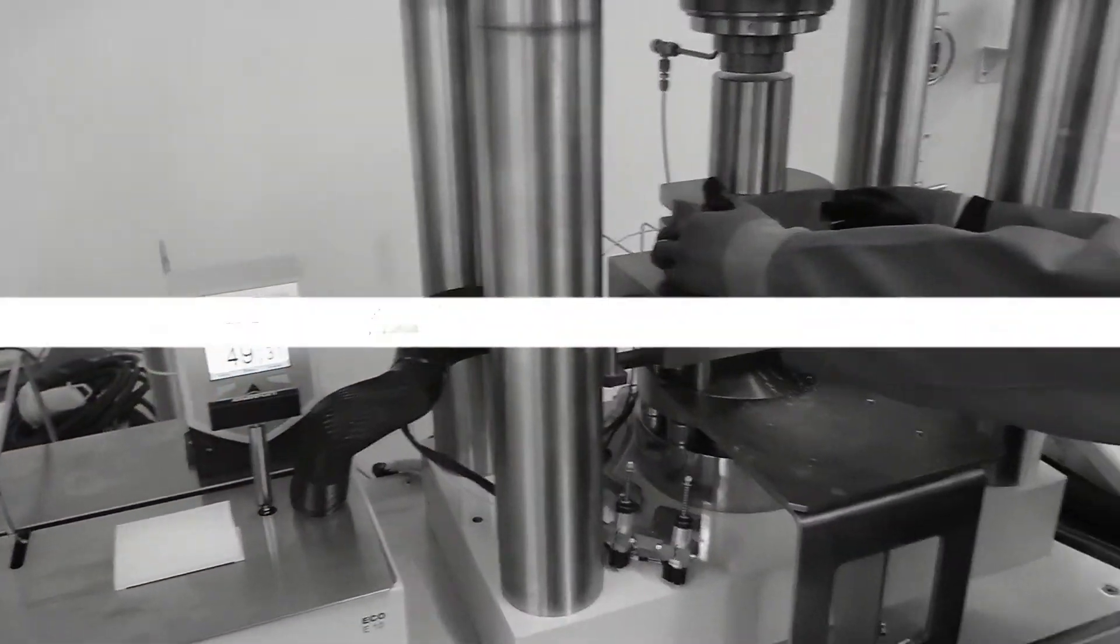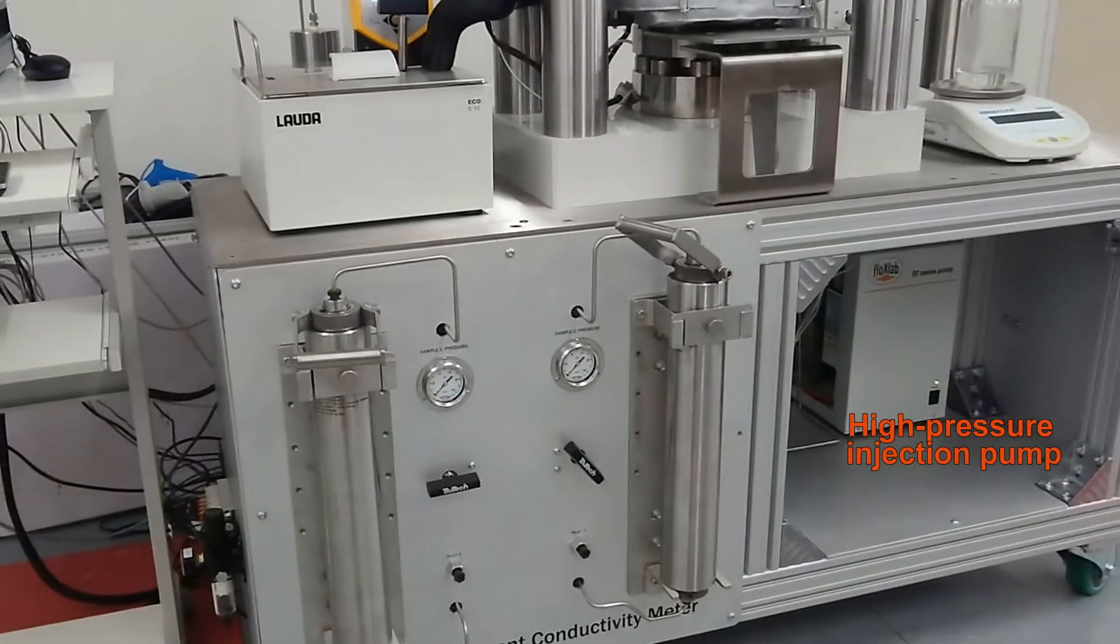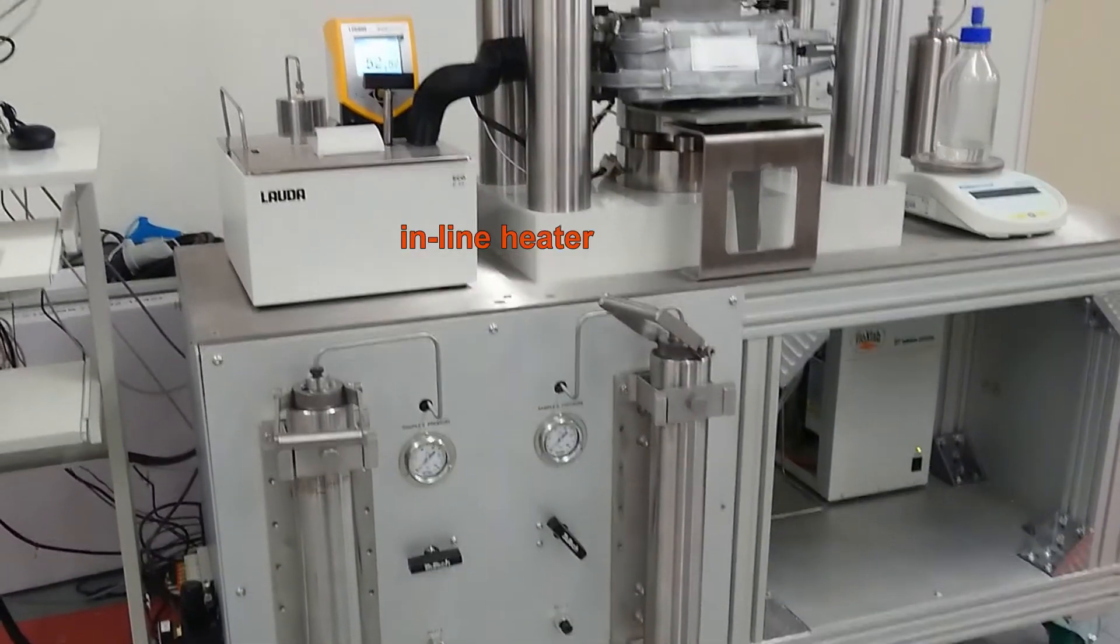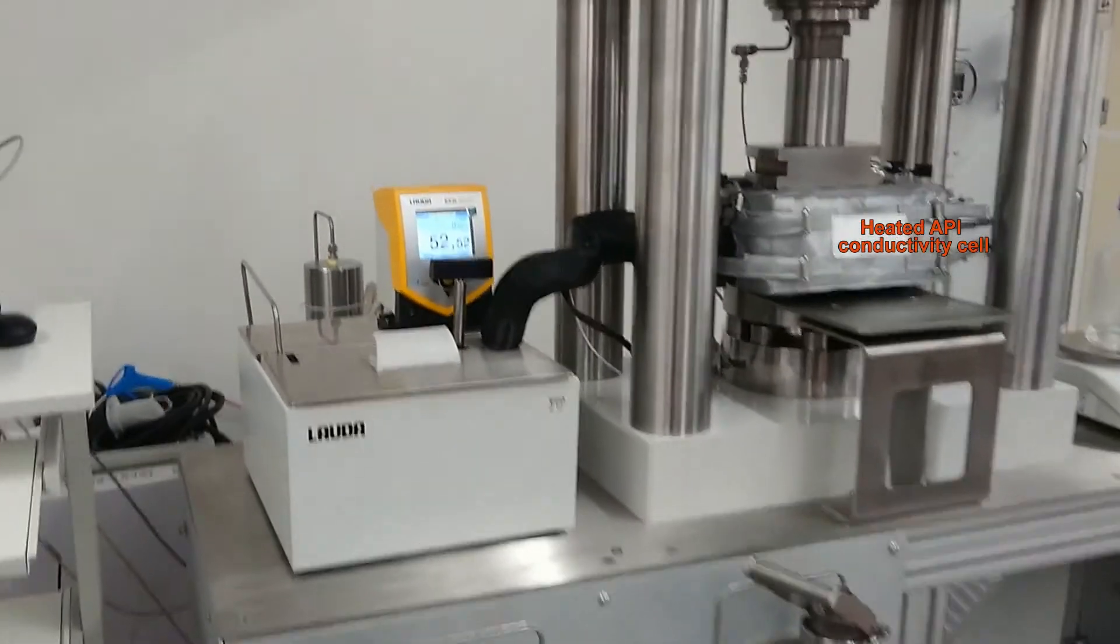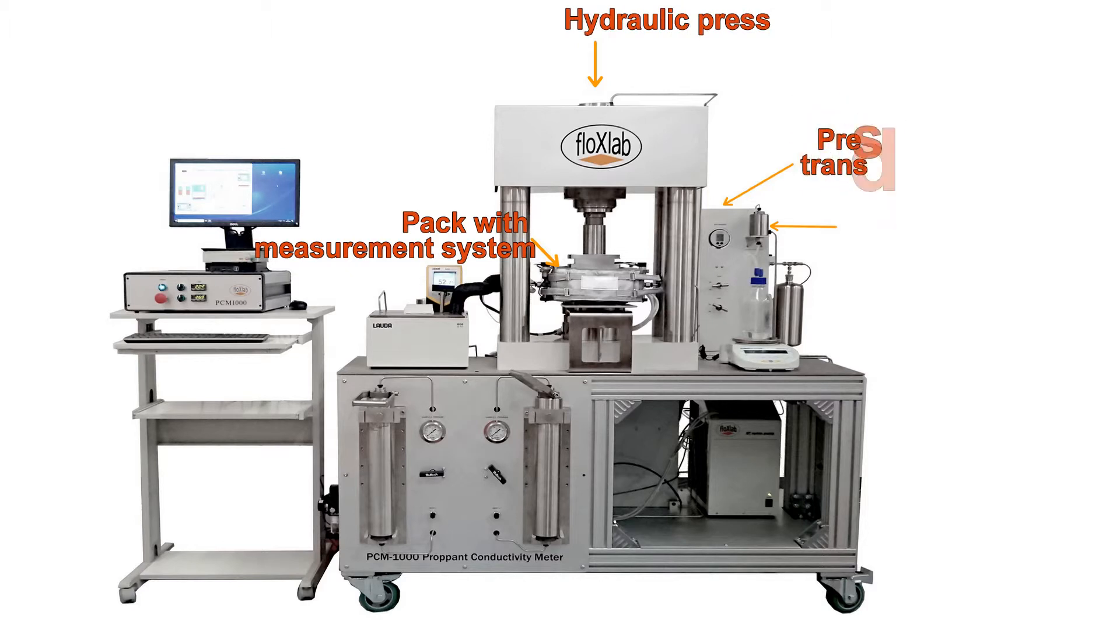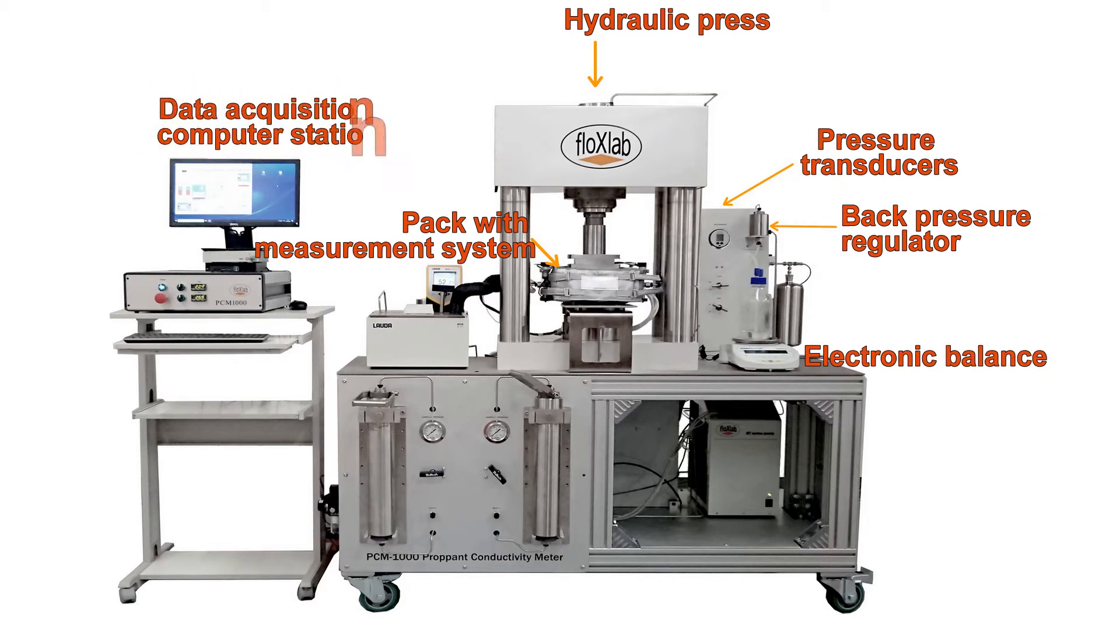The system encompasses a high-pressure injection pump, two fluid accumulators, an in-line heater, a heated API conductivity cell, a pack-width measurement system, a hydraulic press, a number of pressure transducers, a back-pressure regulator, an electronic balance, and a data acquisition computer station.